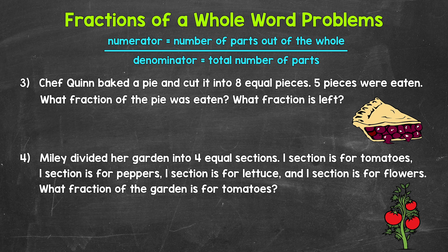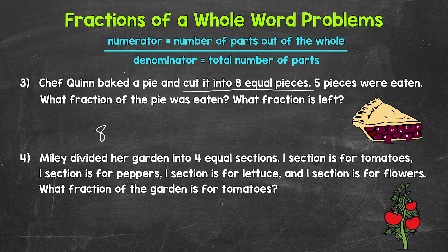Let's move on to numbers three and four. In number three, Chef Quinn baked a pie and cut it into eight equal pieces. Five pieces were eaten. What fraction of the pie was eaten, and what fraction is left? Starting with the first question: the denominator is eight, since the pie was cut into eight equal pieces. The numerator is five, because five pieces were eaten. So five eighths of the pie was eaten.